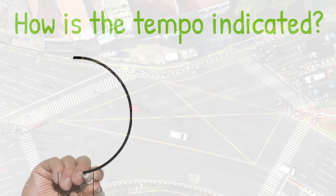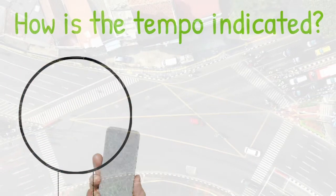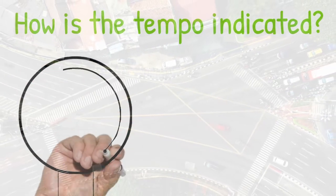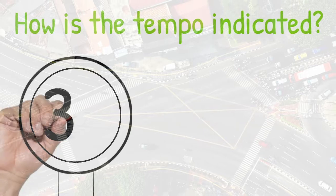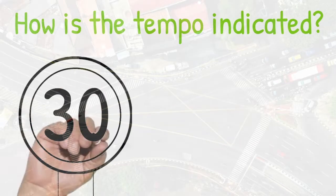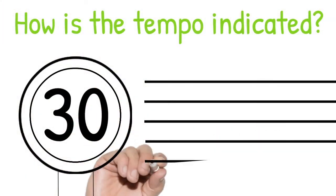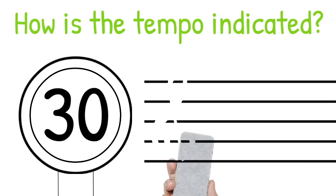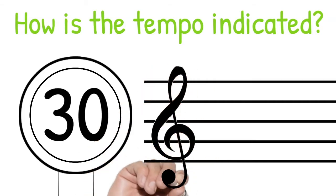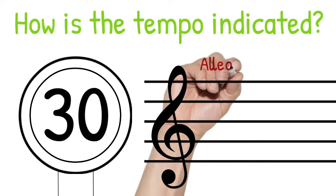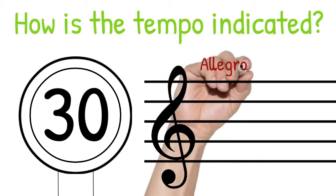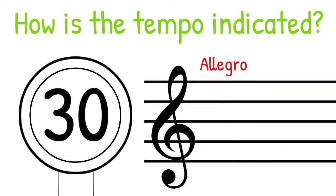You can think of it like a speed limit. The higher the number of a speed limit, the faster you're allowed to drive. And while car speeds are dictated with road signs, tempos are often indicated with an Italian word. These words, called tempo markings, can appear anywhere in a piece of music, but most often they are seen at the beginning.